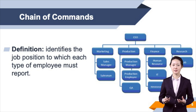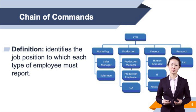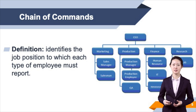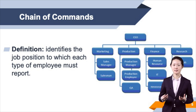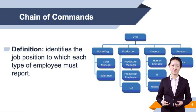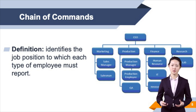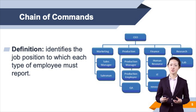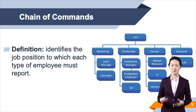For example, in the following chart the sales personnel and sales manager report directly to the head of the marketing department. The head of the marketing, production, finance, and research departments report directly to the chief executive officer of the firm.